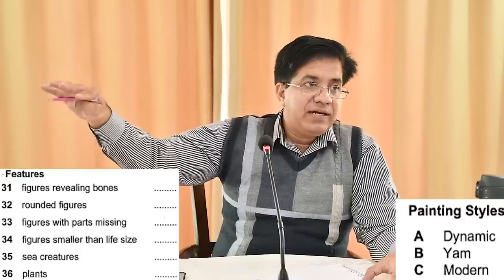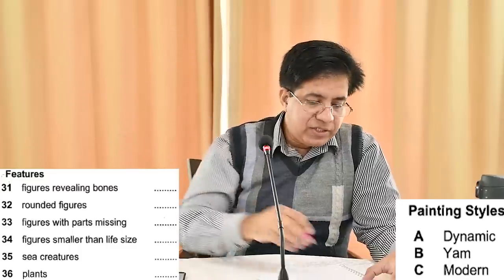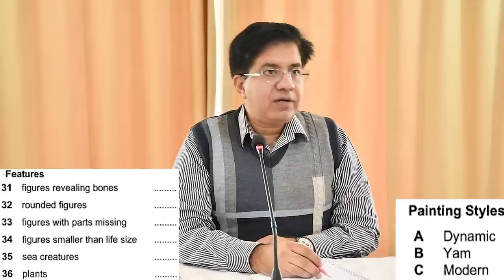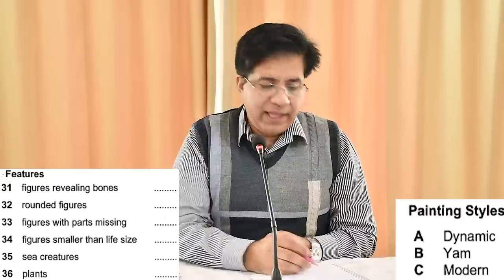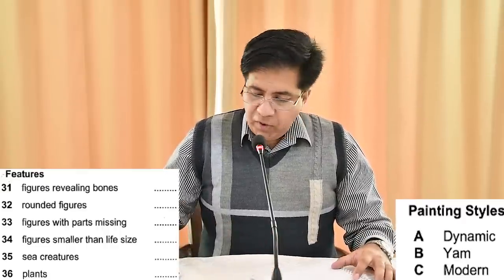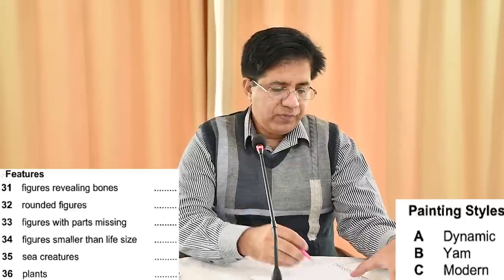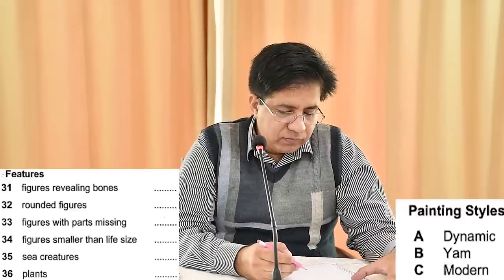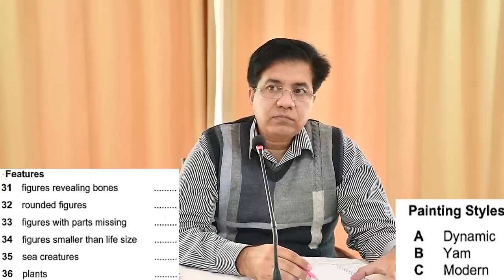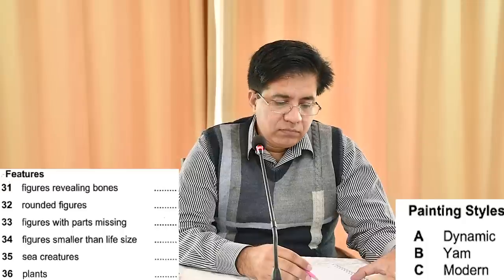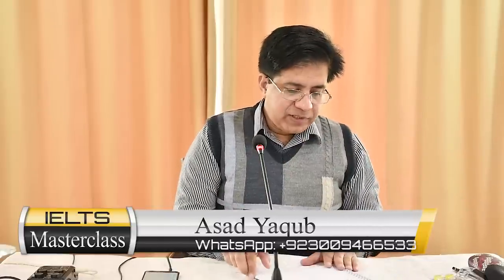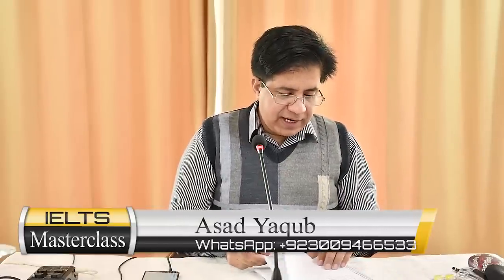Fish started appearing in the Yam period, so for sea creatures the answer is B — Yam. Question 36 is about plants; they might use the word 'vegetables' or 'trees'. The paintings of the Yam tradition also suggest that during this time Aborigines moved away from animals as their main food source and began including vegetables in their diet, as these feature prominently. So Question 36 is also B — Yam.